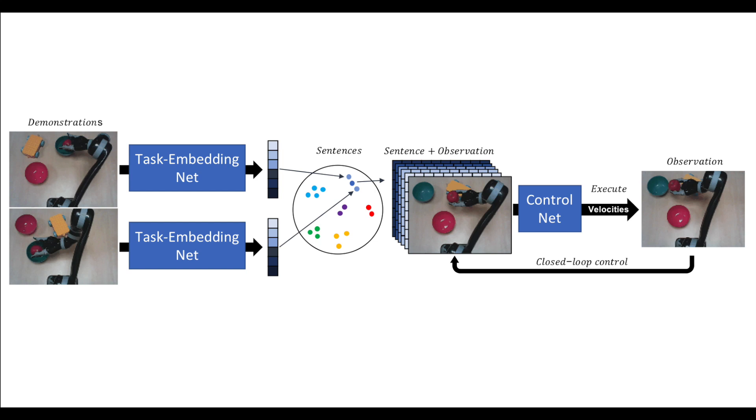The control network continuously receives new observations of the scene in a closed-loop manner. Both the task-embedding network and the control network are jointly optimized to produce a rich embedding.